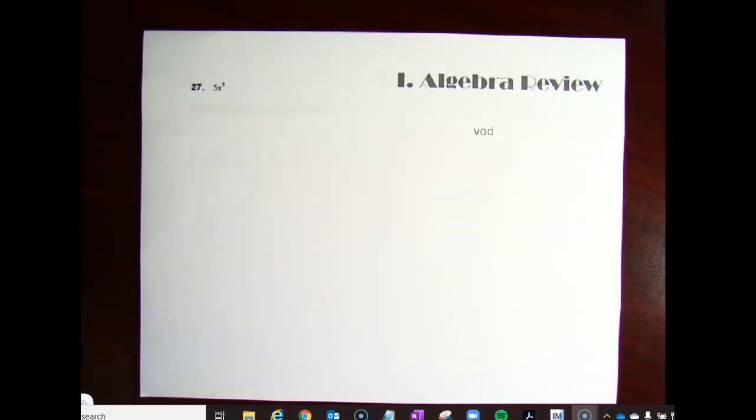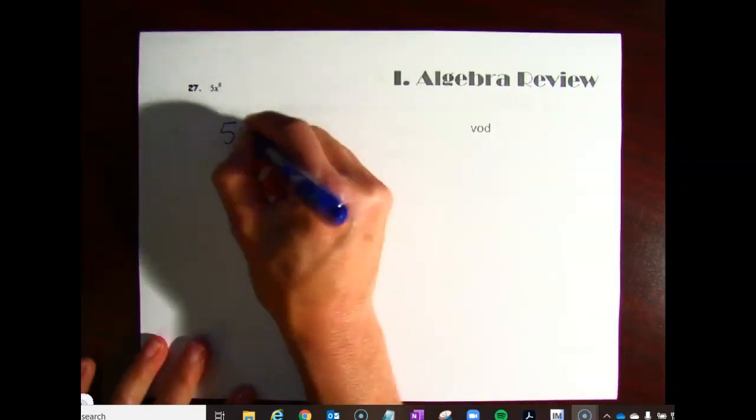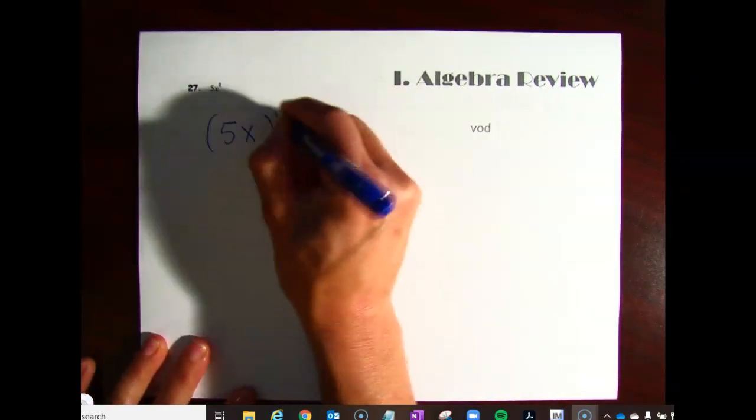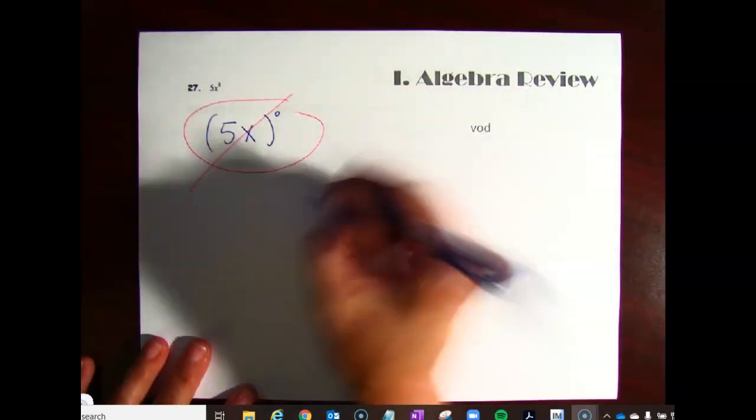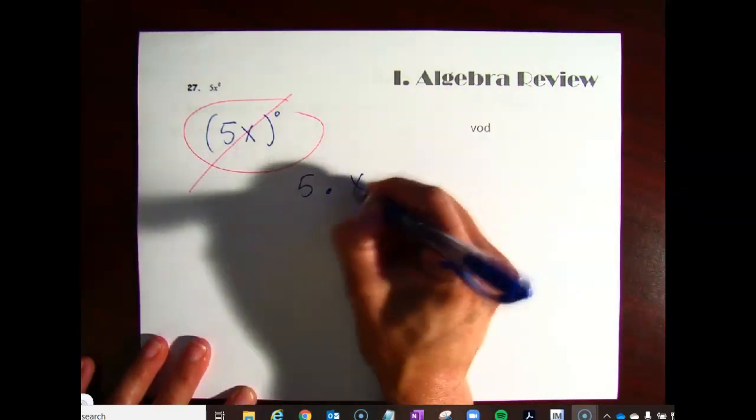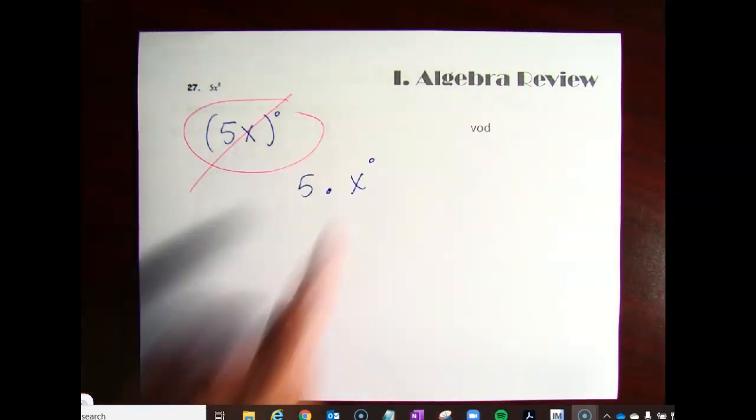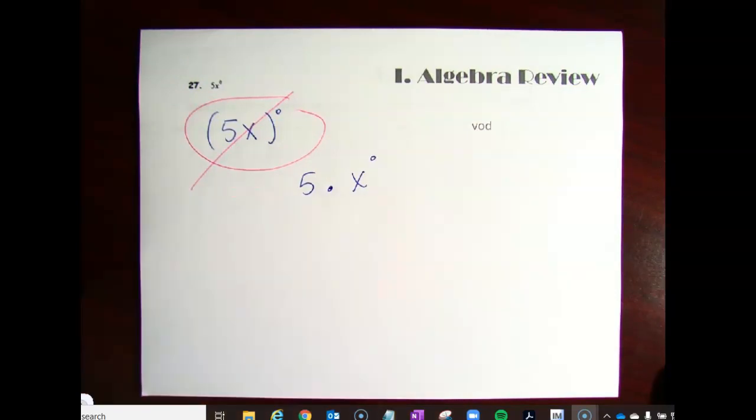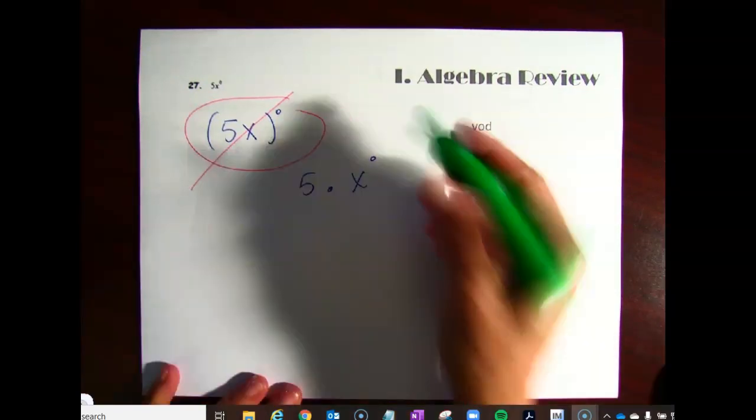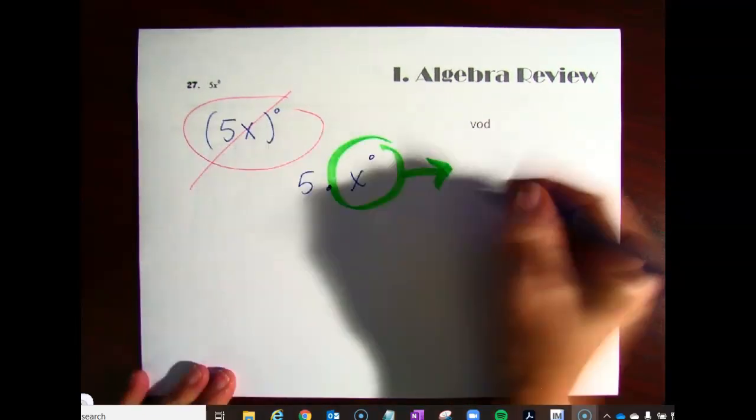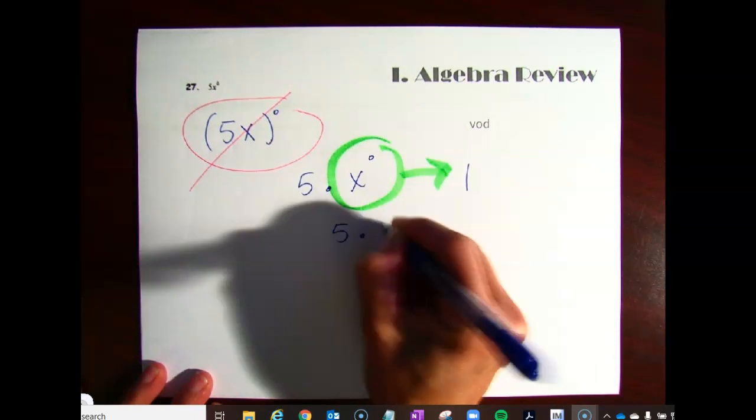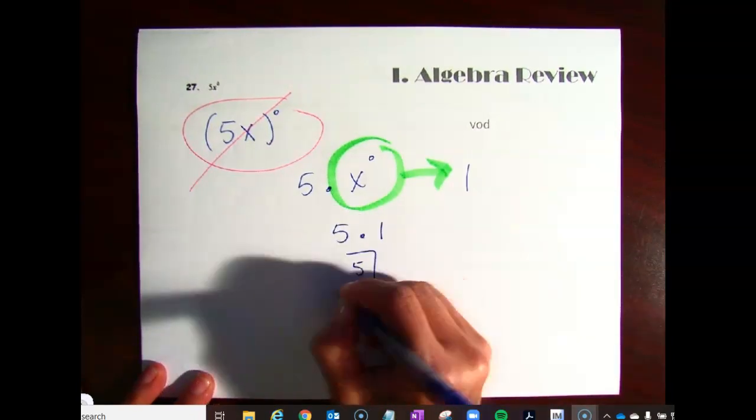Number 27, really the only, well, there's a couple of things that your teacher wants to point out for number 27. First of all, this is not this. So no, no, no, that is not what's going on here. What is going on is it is 5 times x to the 0 power. And remember, anything to the 0 power, you need to remember this from Algebra 1, anything to the 0 power always equals 1. So this is going to be 5 times 1. So the answer here is just a 5.